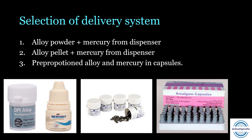Next is selection of the delivery system. The amalgam alloy and mercury are available in different forms depending on clinician preference. First, alloy powder in a bottle with mercury from a dispenser — the most common form. Second, alloy pellets in pre-proportioned form with mercury from a dispenser. Third, pre-proportioned alloy and mercury in capsule form, which ensures consistent proportioning, a low mercury-alloy ratio, and reduces health hazard since physical handling is not required.